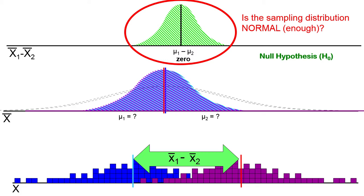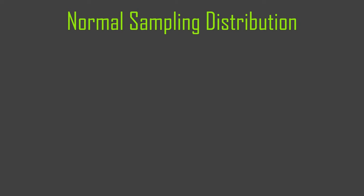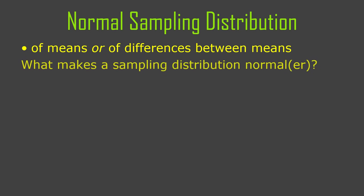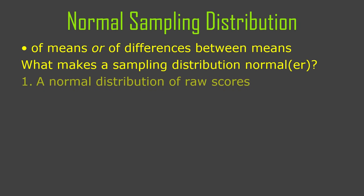Don't get thrown off by t versus normal — just tell yourself that t and normal are the same thing. T is what we have to use to estimate the normal when we don't know sigma. So the normal sampling distribution is the sampling distribution of means or differences between means, and we have to remember what affects the normality of a sampling distribution.